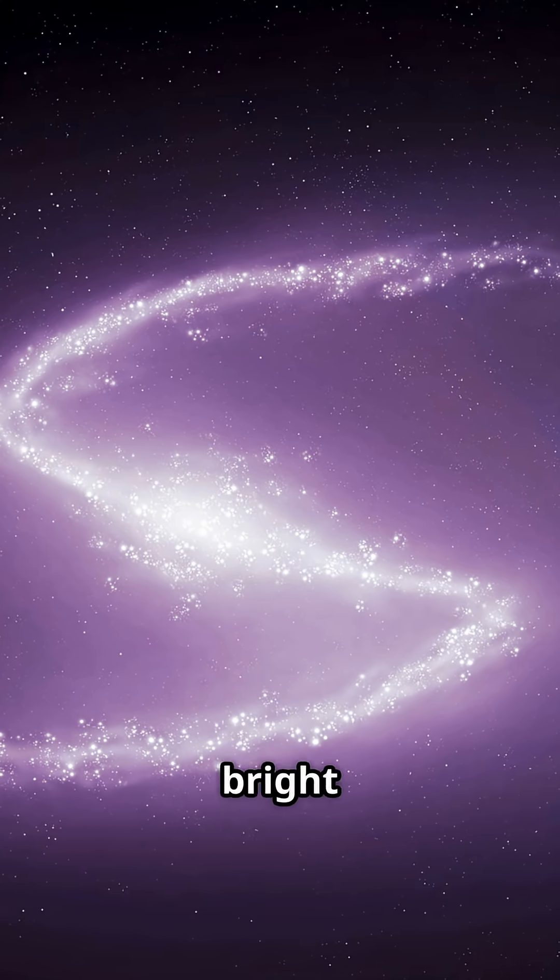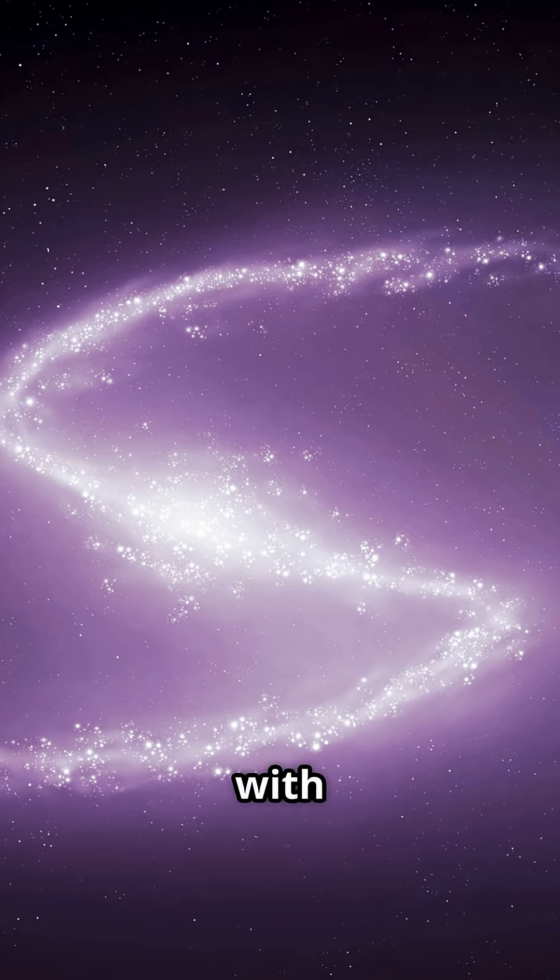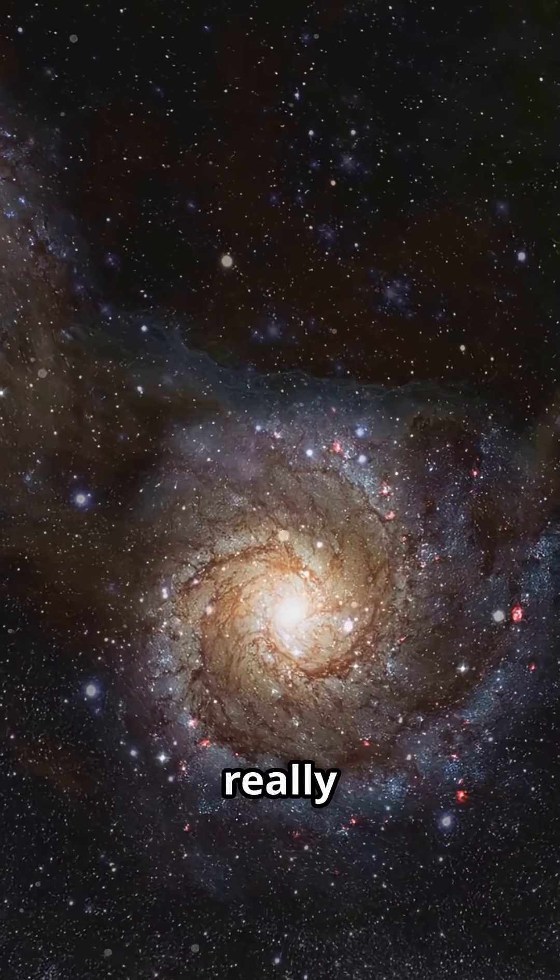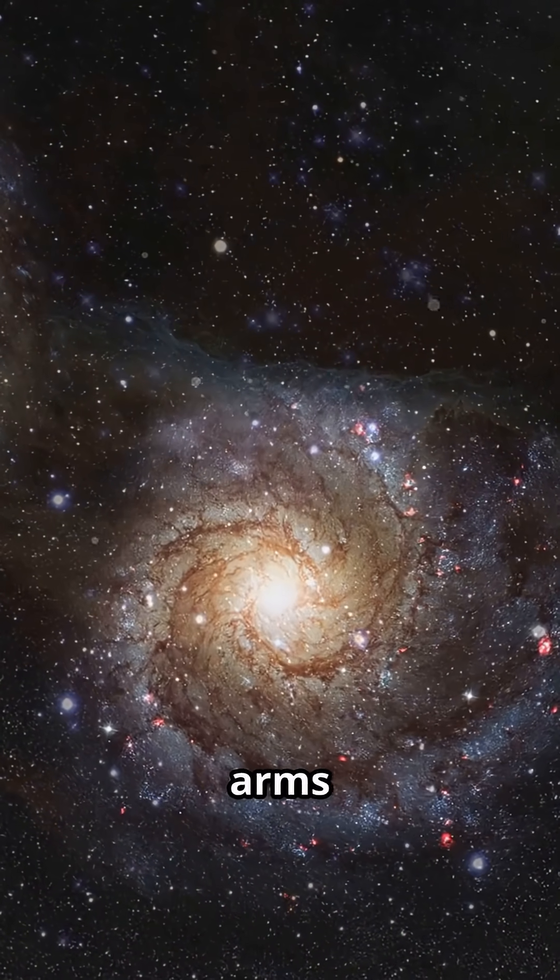Barred spiral galaxies have a bright bar running through the middle, with the arms spinning out from the ends of the bar. The shapes can get really wild, depending on how tightly wound those arms are.